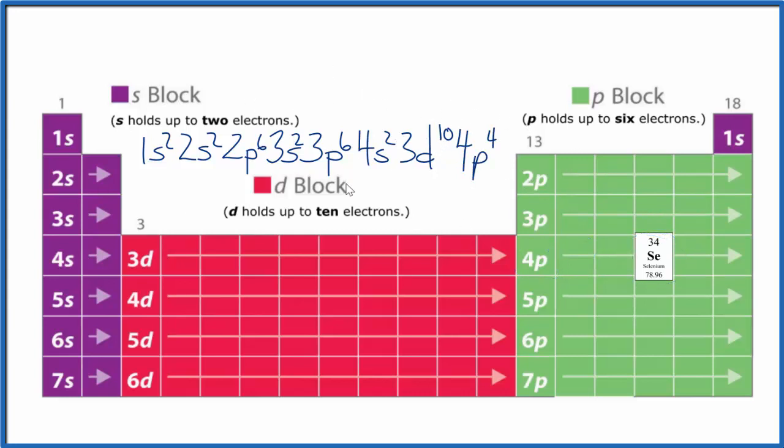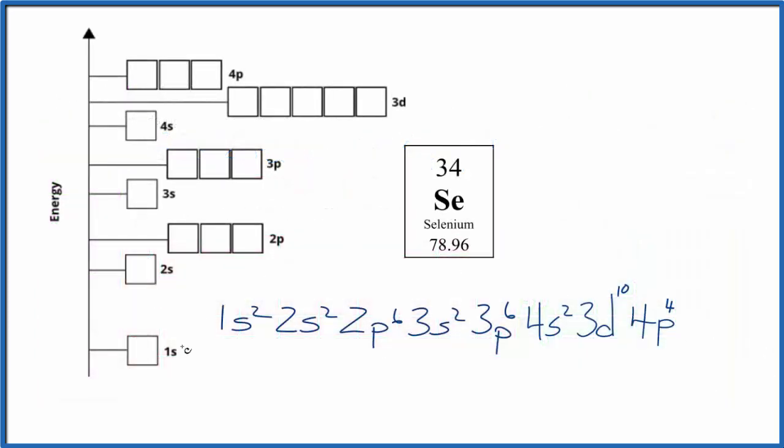So we can use the electron configuration to write the atomic orbital diagram for selenium. Both the electron configuration and the atomic orbital diagram are just trying to show where the electrons are around the nucleus of the selenium atom. Think of the nucleus down here, and these are energy levels around it, kind of like shells.